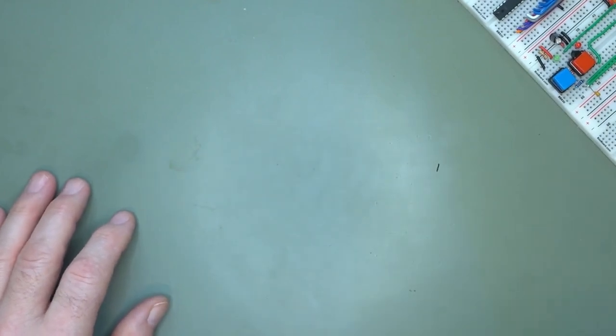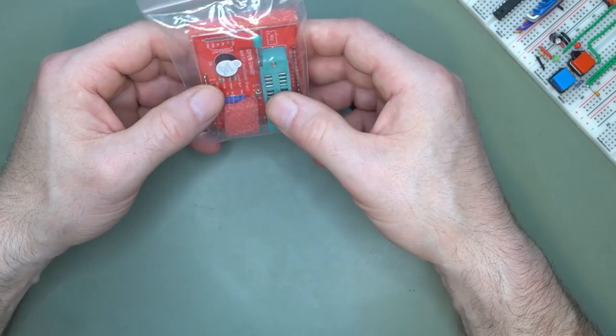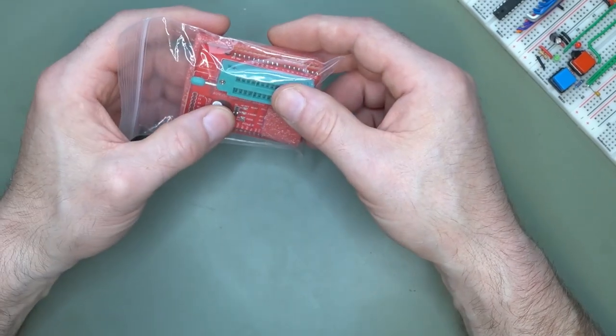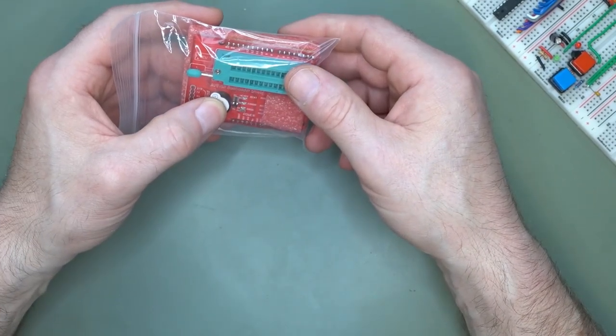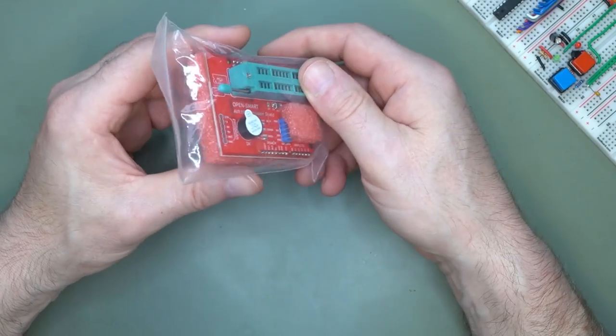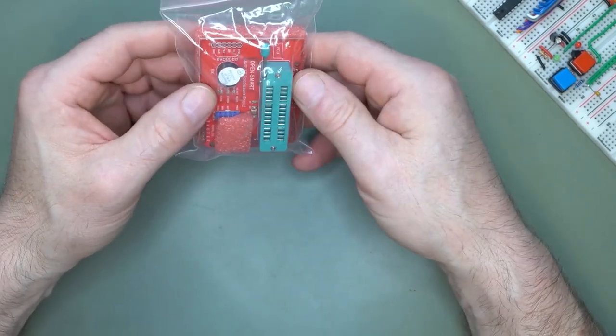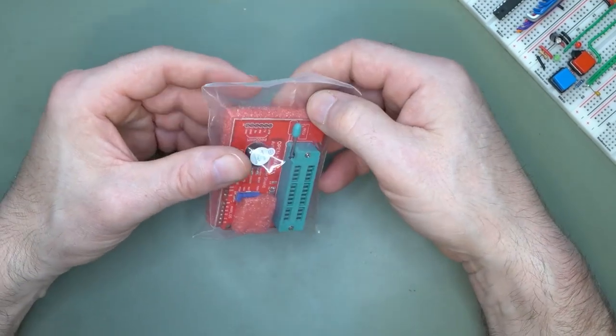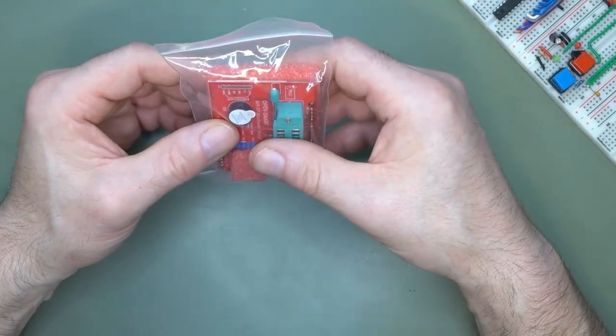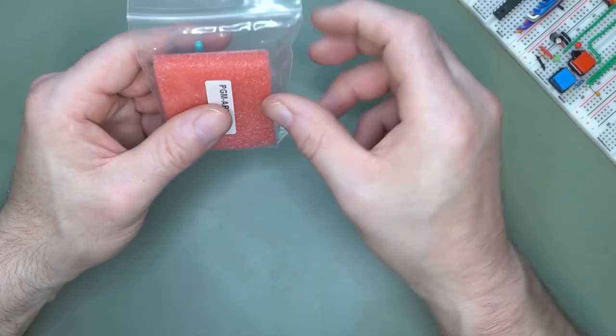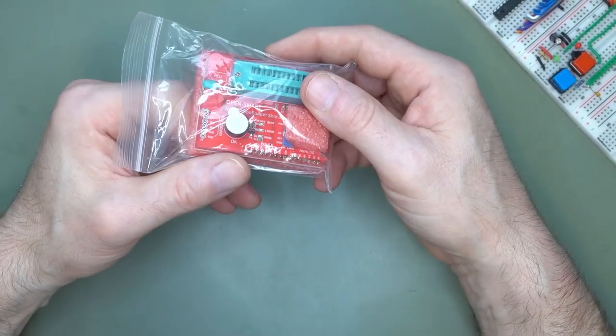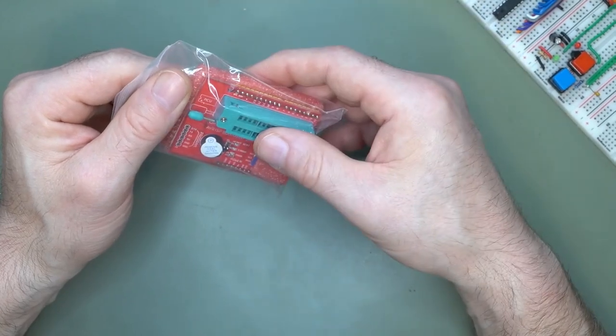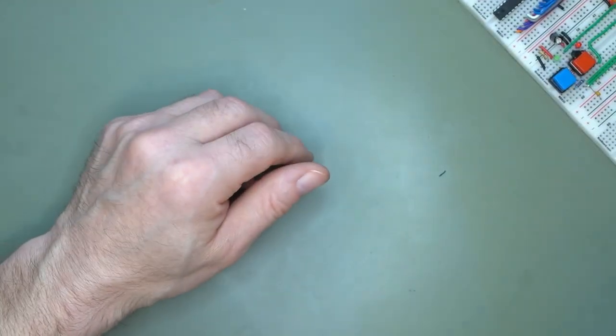I got this bootloader shield to program ATmega 328s, because not all ATmega 328s are programmed with the bootloader. So at least I can pre-program them with this shield. Otherwise I could use my EEPROM programmer, but you just put it on, press a button, and it's done. No fuss.